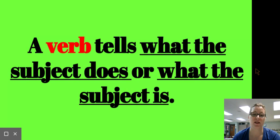A verb that tells what the subject does is an action verb. A verb that tells what the subject is, is a linking verb. So a verb tells what the subject does or what the subject is.